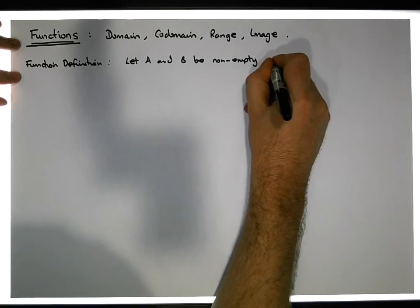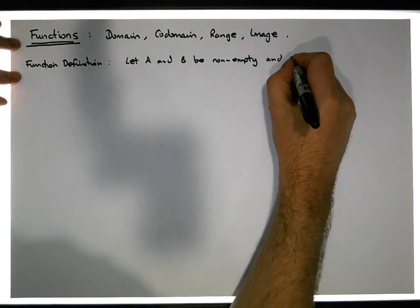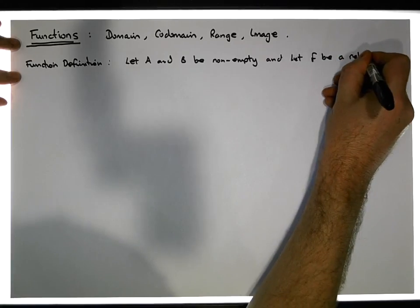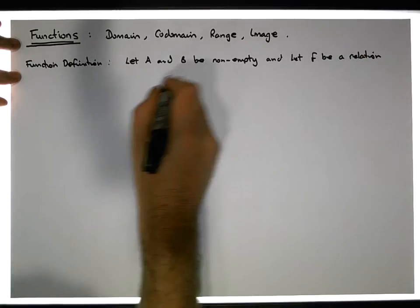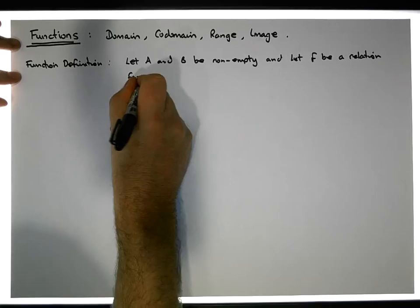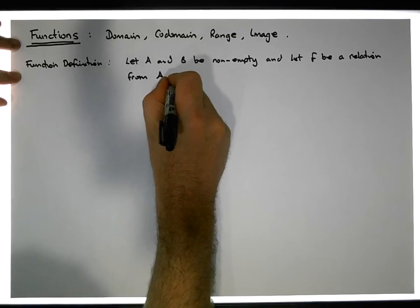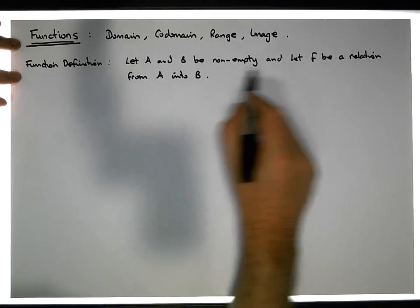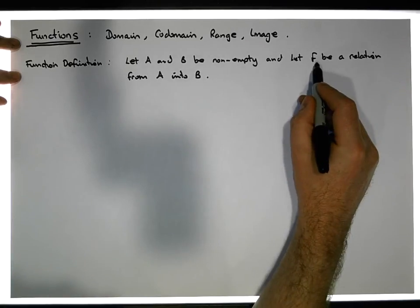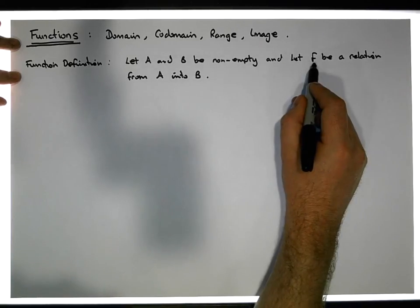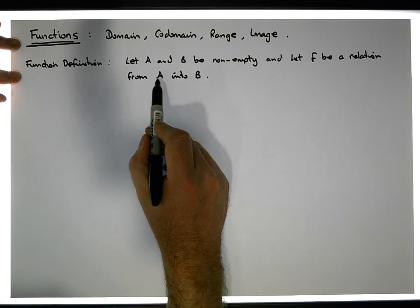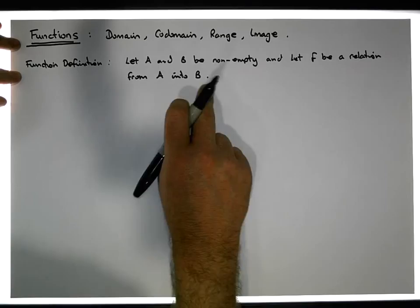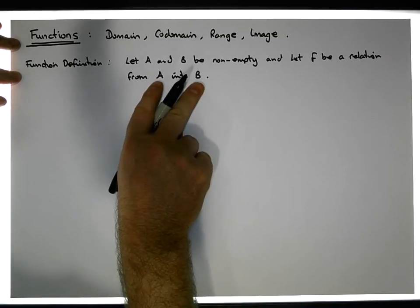Let f be a relation from the set A into the set B. In other words, f is some relation from A into B, which means f is basically a subset of the cross product of A with B. That's the way we define a relation—a relation is a subset of a cross product, in this case the cross product of A with B.